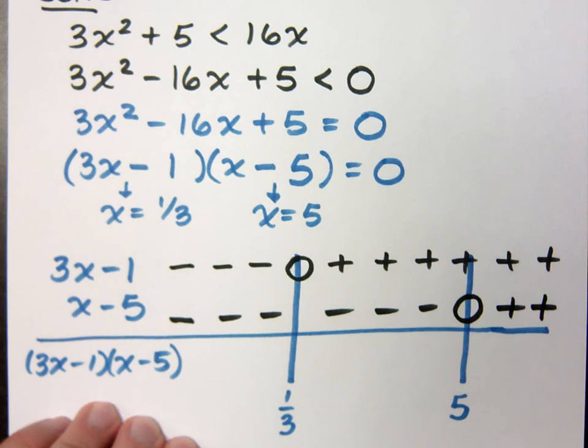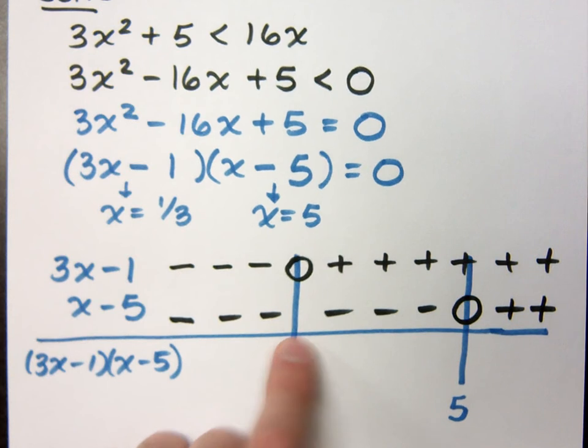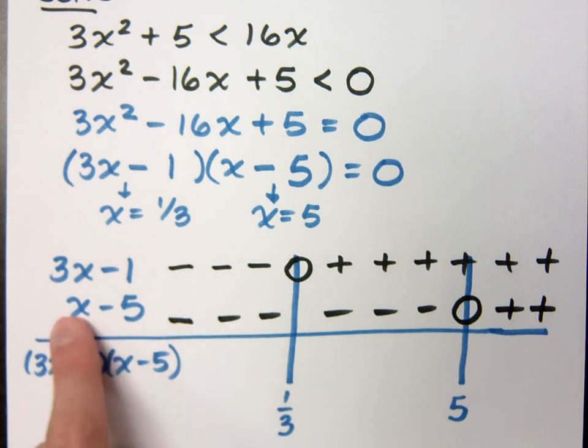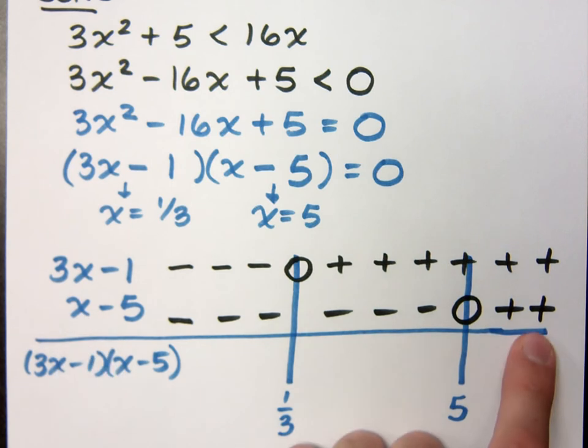If you don't believe me, plug in those numbers that are left of 5. Like 4 gives you a negative. Plug in 0, that's negative. On the right side of 5, like 6 or 7, you get positive values.